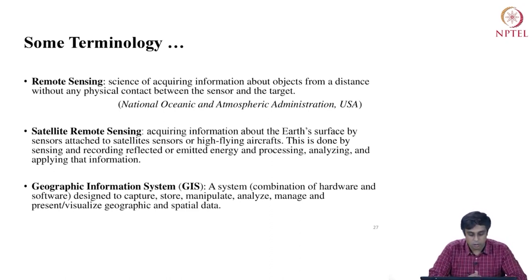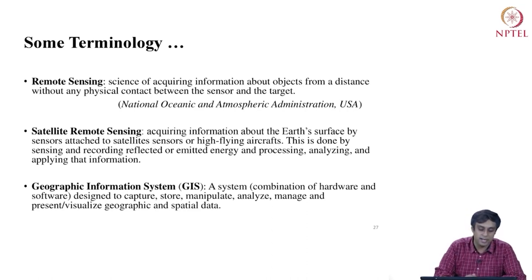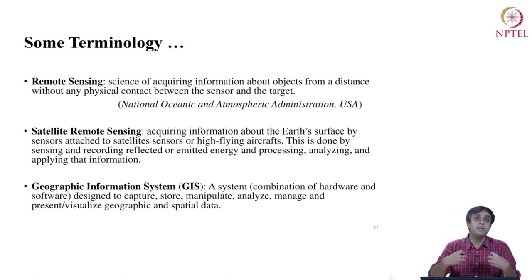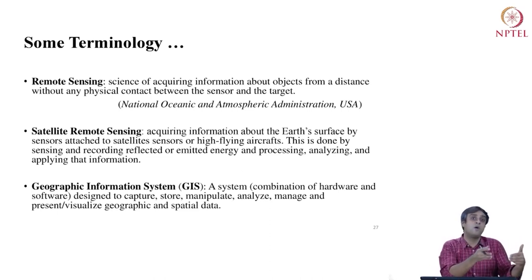The third term is GIS — the Geographic Information System. GIS is a system combining both software and hardware designed to capture, store, manipulate, analyze, manage, and present or visualize geographic and spatial data. GIS is really the physical entity — the software interface — that allows us to work with spatial data in practice. The data themselves come from sensors placed away from the object of interest, which we call the target.